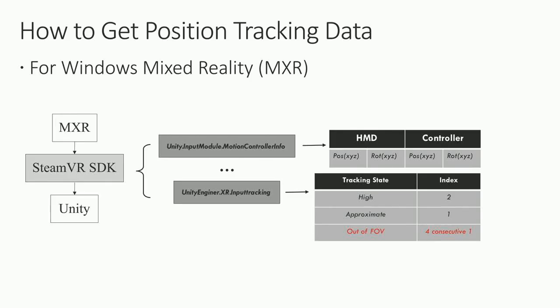The current mixed reality system tracks accurately in the high accuracy tracking status. The state we want to emphasize is the approximate stage — when the controller goes out of field of view. We categorize this into two cases: the controller moving at the boundary and returning quickly, or completely moving out for two or more seconds. We redefine tracking status by counting consecutive approximate states: one consecutive instance is 'approximate,' and four consecutive ones we define as 'out of field of view.'